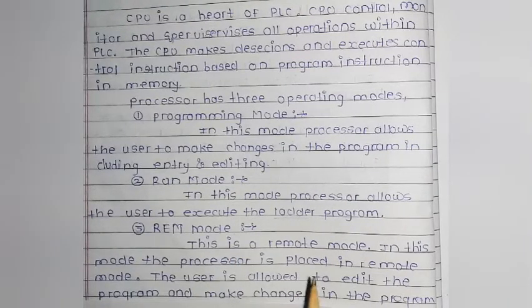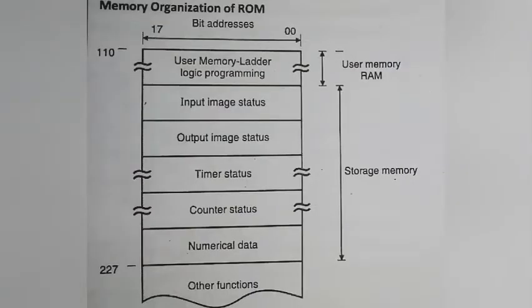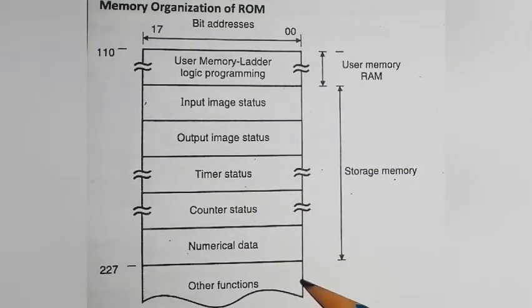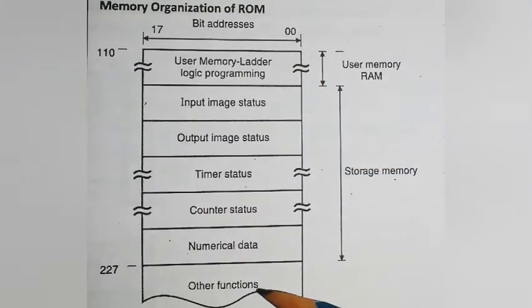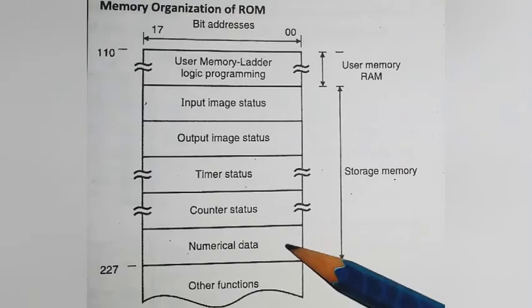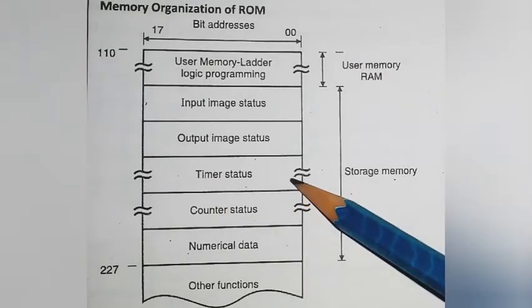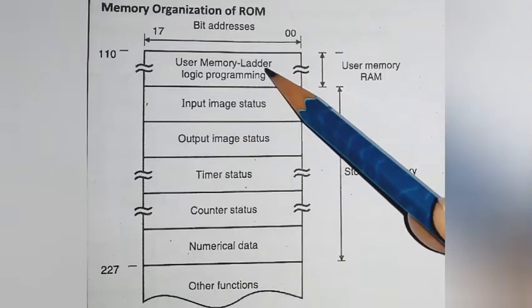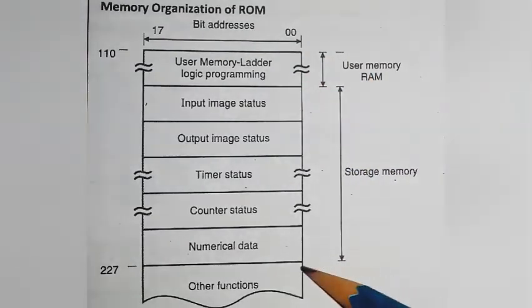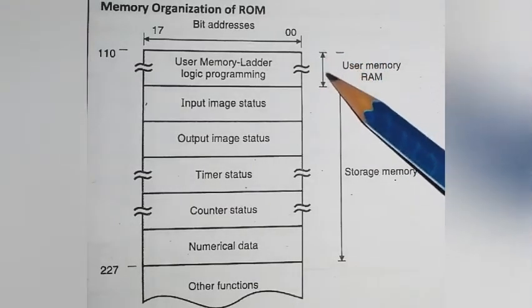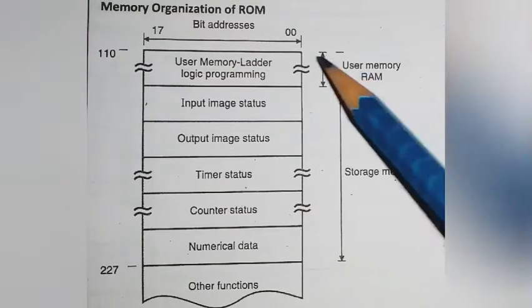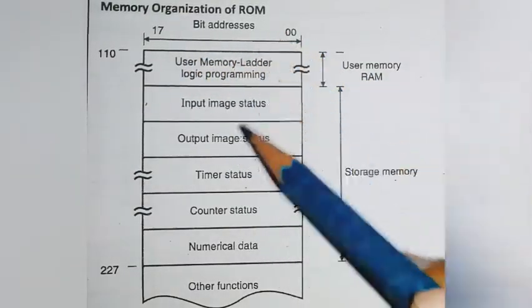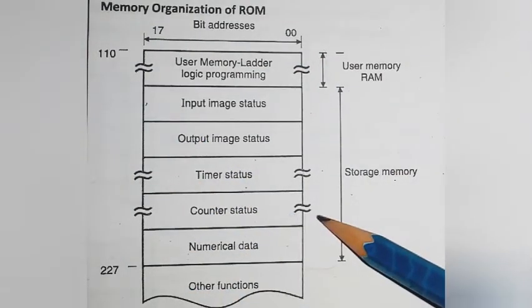The next topic is memory. This is the diagram for the memory organization. The next part of the PLC is memory. It includes other functions, numerical data, counter status, timer status, output image status, input image status, user memory with ladder logic programming. This part is storage memory, and this part is user memory RAM, with addresses from 00 to 17 bit.